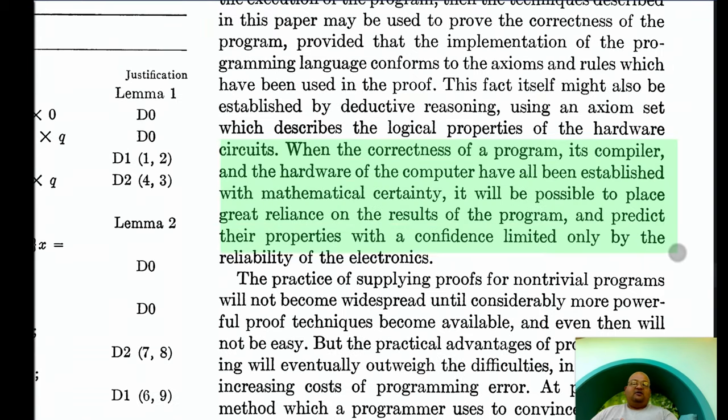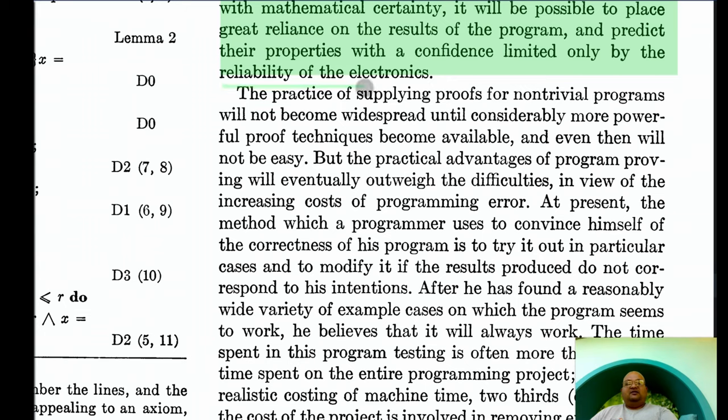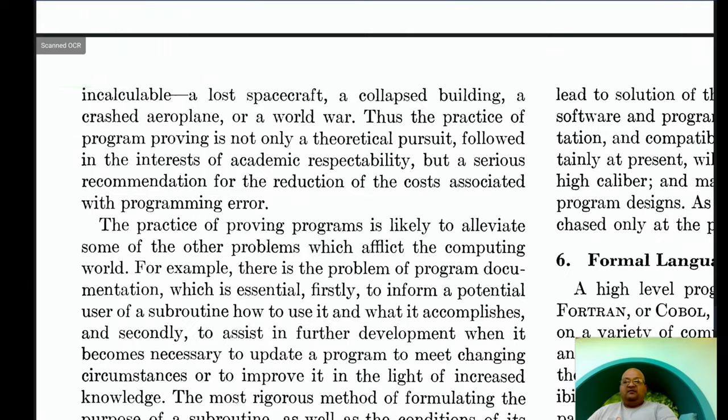The ultimate goal of this entire effort is to prove the entire stack correct. You prove the program correct. You prove the compiler correct. You even prove the hardware correct. And when you have done all of that, you can be absolutely certain that the only way a program can then fail is if the underlying hardware fails. And the author acknowledges that proving complex, non-trivial programs correct is a really hard task and will need much more powerful proof techniques that make it easier. But what makes it worth it is that the consequences of erroneous software can be pretty big. You can lose spacecraft. You can crash planes. And this paper was written in 1969, which was in the middle of the Cold War. An erroneous piece of software could even start a world war.